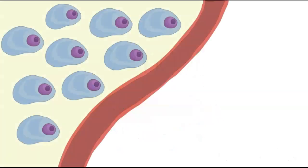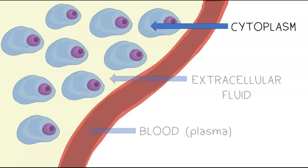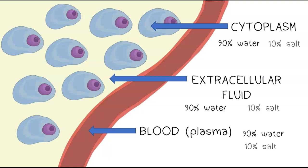In order to maintain equilibrium, molecules can diffuse into or out of cells between the cytoplasm, the extracellular fluid, and the blood plasma. The normal concentration of these body fluids is about 90% water and 10% salt.